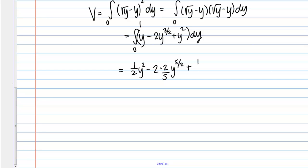And then plus 1 third y cubed. And this is going to be evaluated from 0 to 1. So this is 1 half y squared minus 4 fifths y to the 5 halves plus 1 third y cubed. Evaluated from 0 to 1.